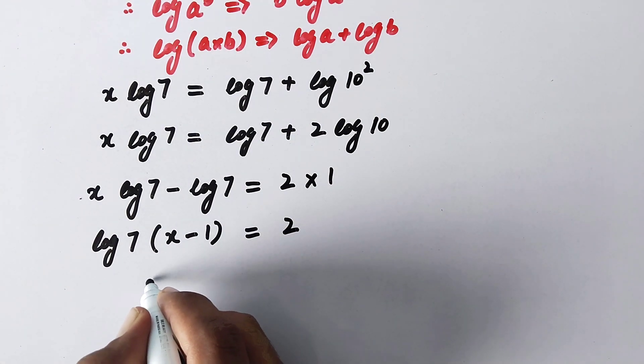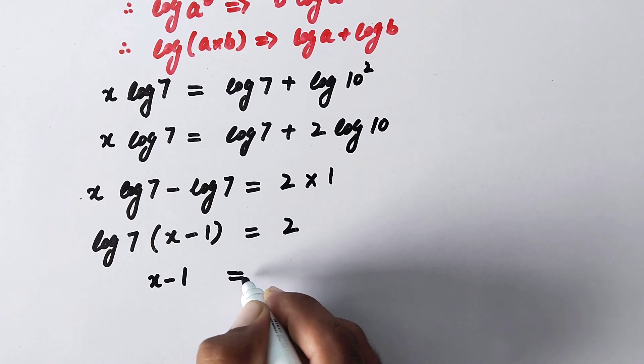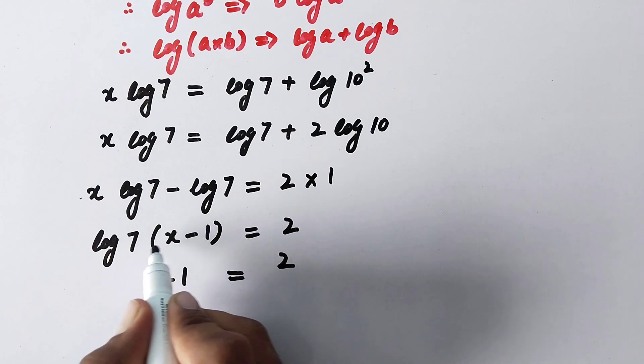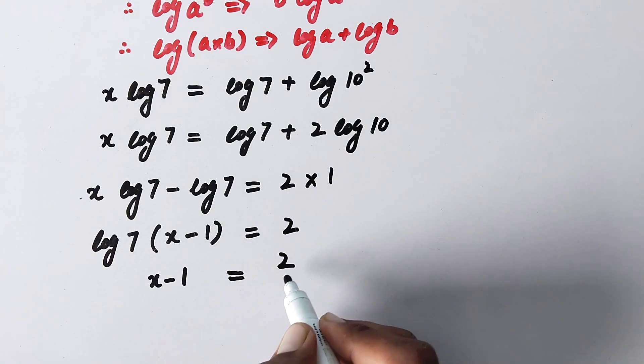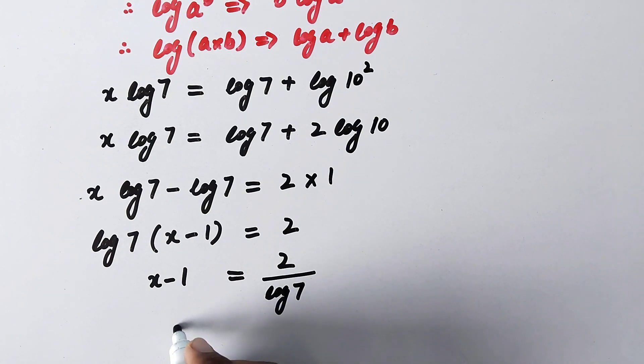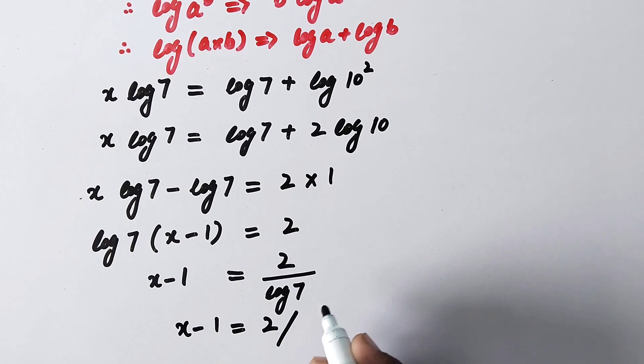This value is multiplying on left side so on right side it will be divided. And now in next step we will write x minus 1 is equal to 2 divided by—now here we will use calculator or logarithm table to find the value of log 7, so the value of log 7 is 0.84.